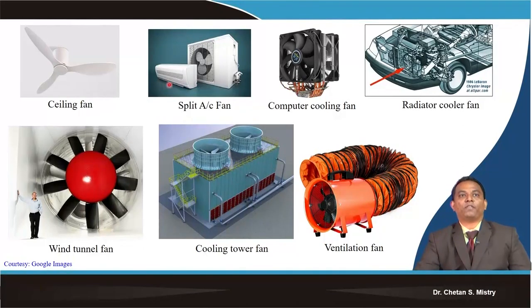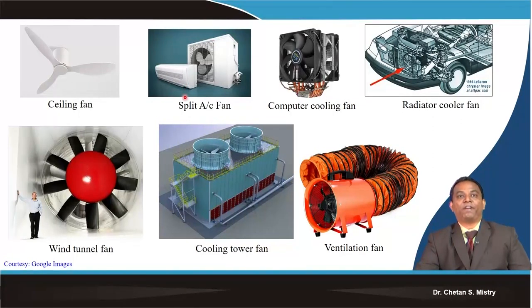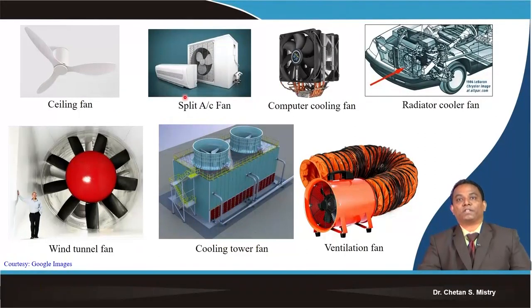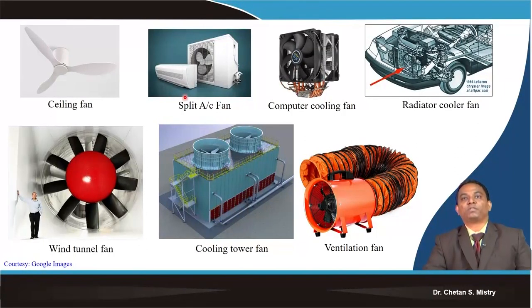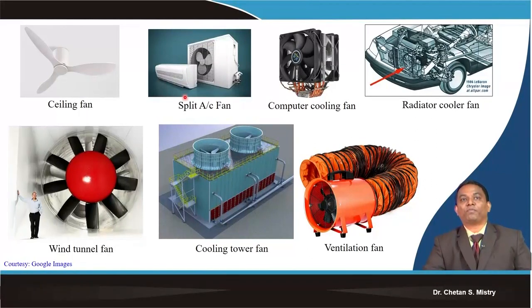The ceiling fan supplies large quantities of air with low pressure. The split AC fan is used for cooling the condenser. With high speed computing requiring large cooling for processors, computer cooling fans have become important. The radiator fan is used for cooling the engine. All these applications are for cooling purposes.